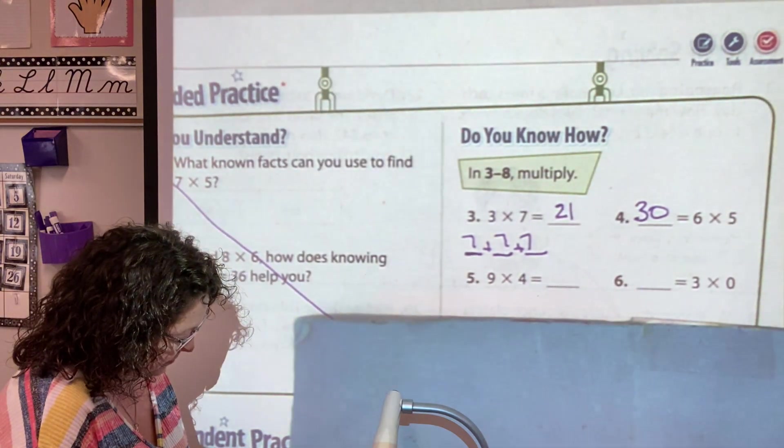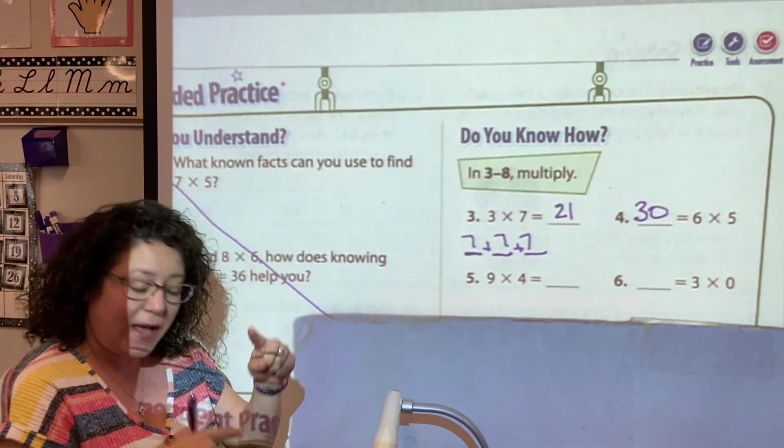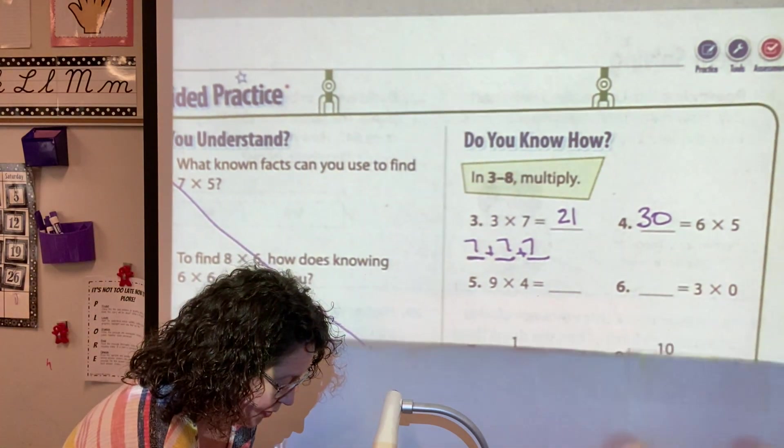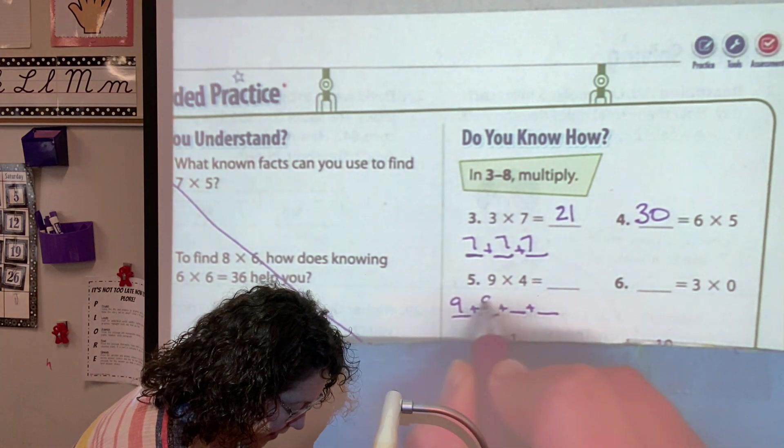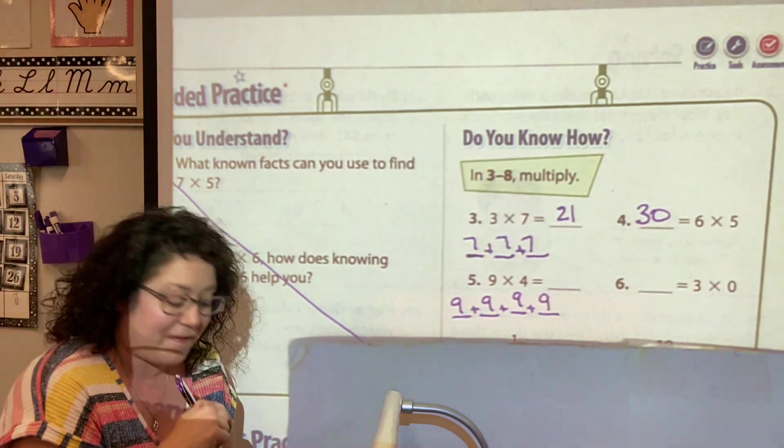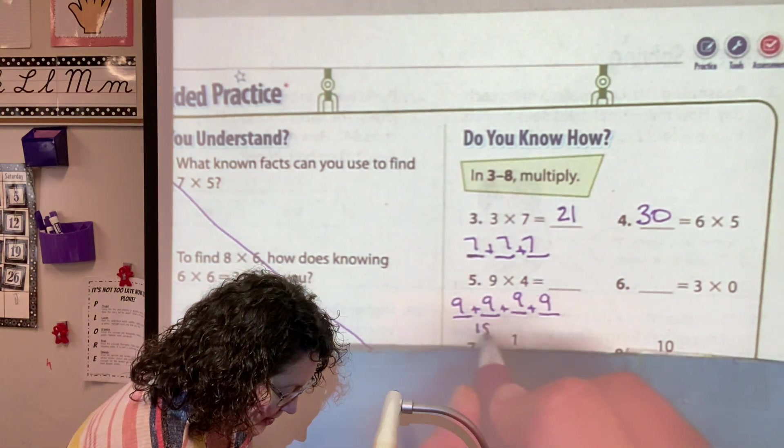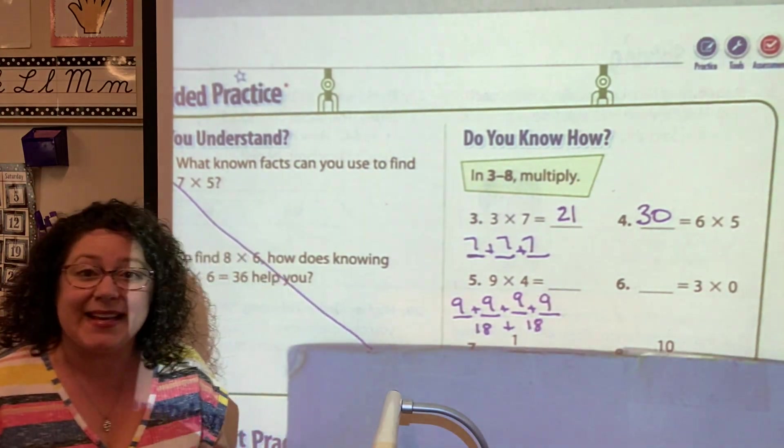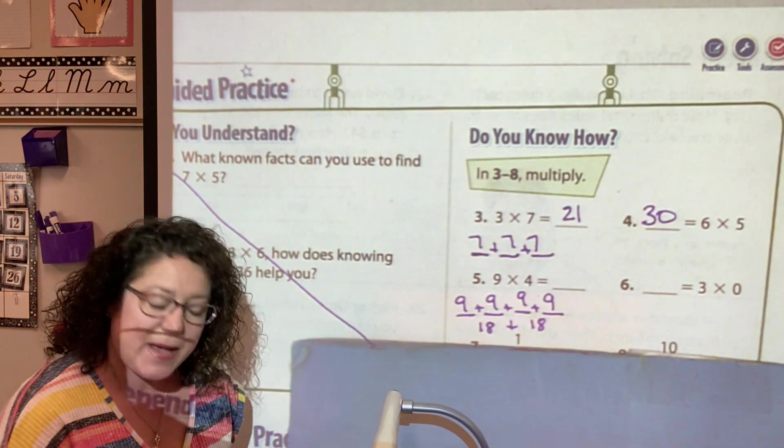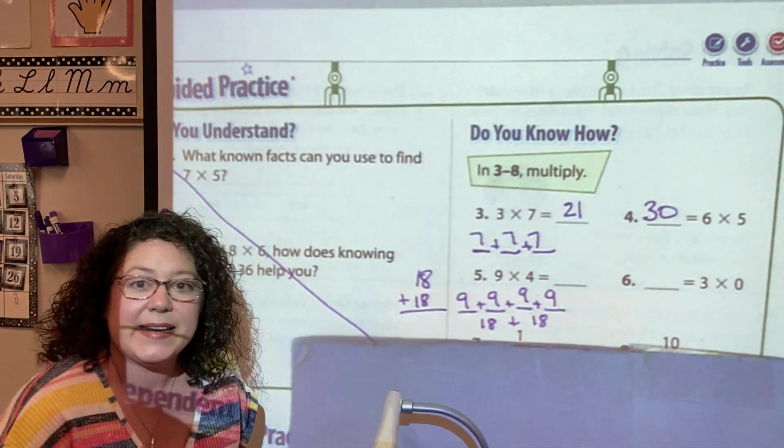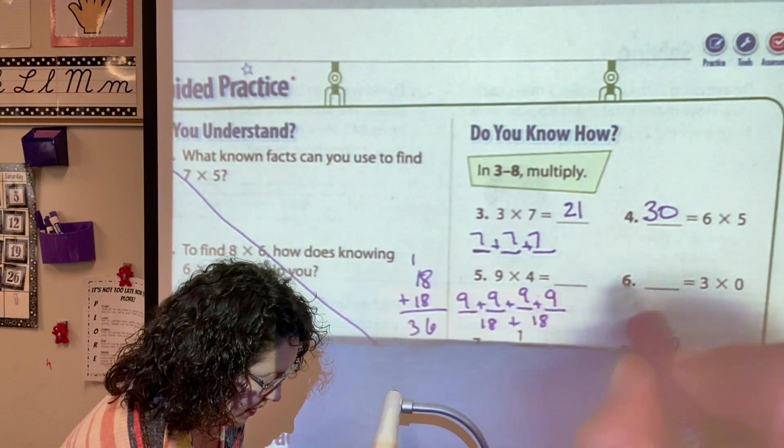Nine times four. Well, I could say nine groups of four. That's a lot of groups. I could flip-flop it around and say four times nine. So then it would be four groups of nine. Because remember that commutative property tells me we can flip our factors. So then I can do nine plus nine is eighteen and then nine plus nine is eighteen. Then eighteen plus eighteen. If I don't have enough space there, I can just write it over here and add it. Eight plus eight is sixteen, one, one, one is thirty-six.